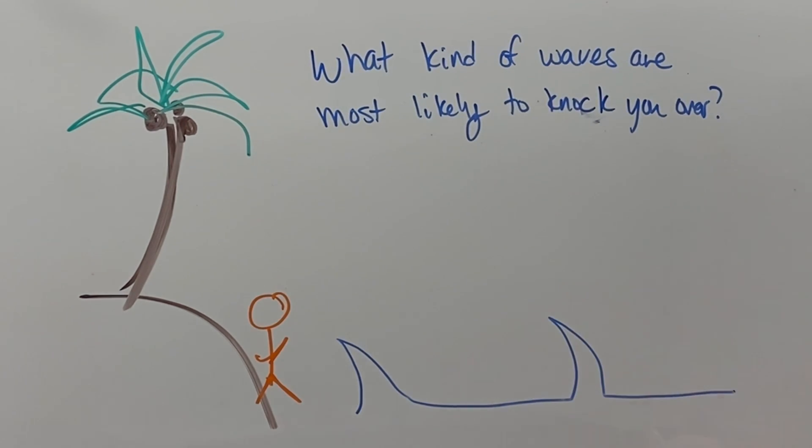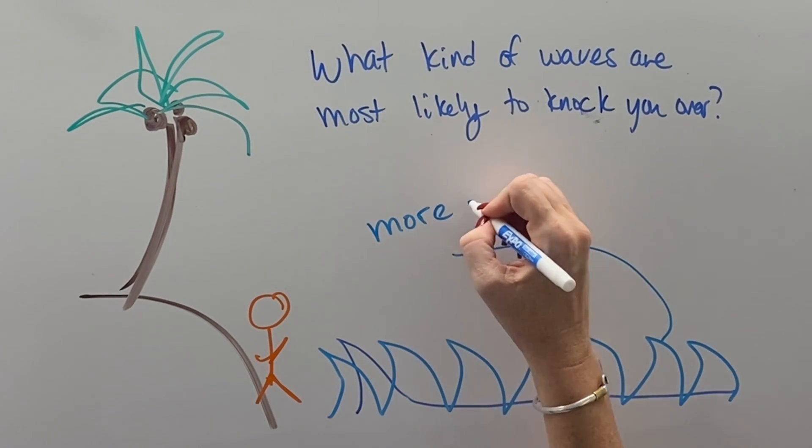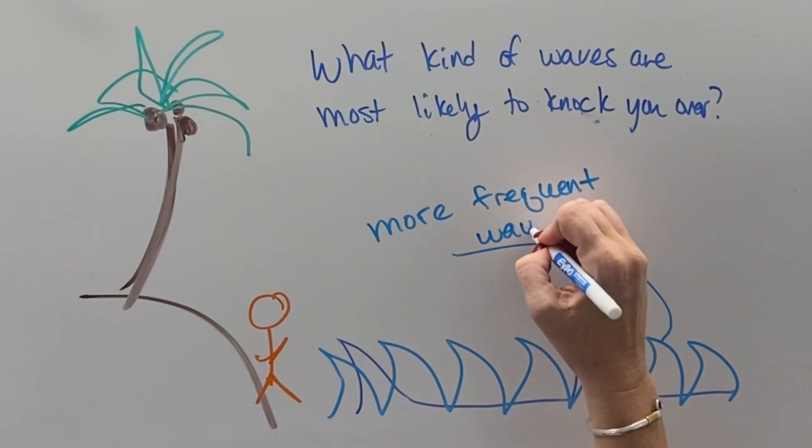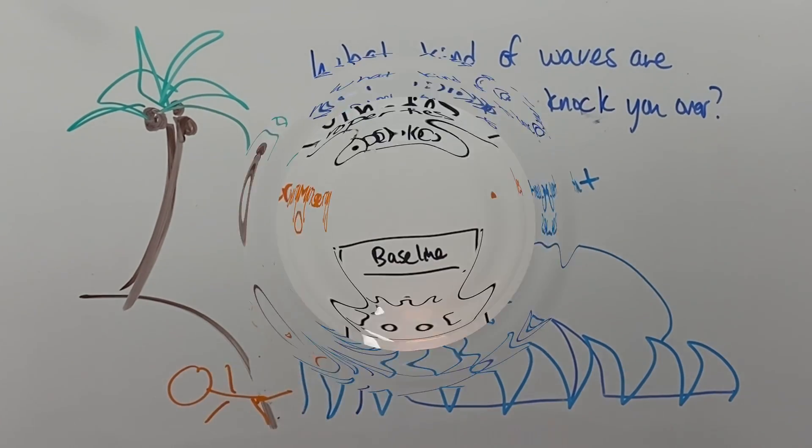And if we had a second set of waves that came slowly or came wave after wave after wave after wave, of course, the more frequent set of waves is going to knock you over as well. Kabam, right?